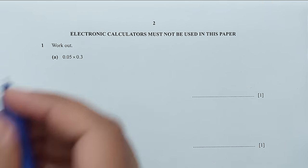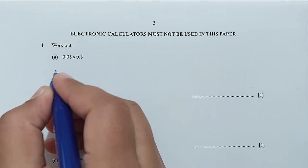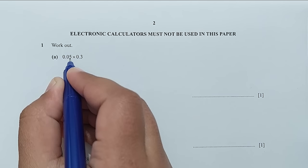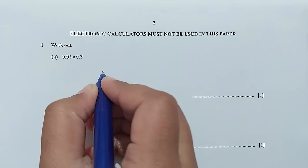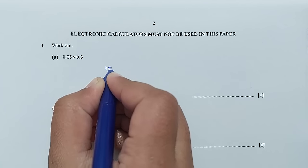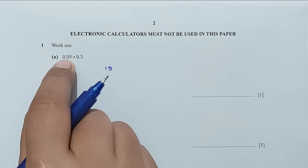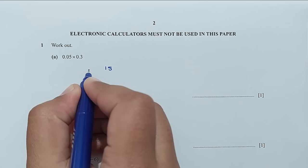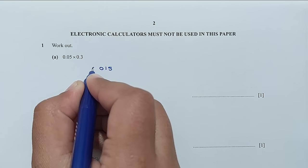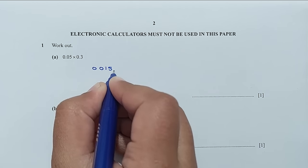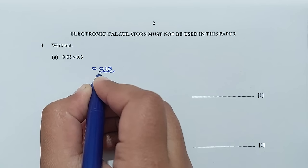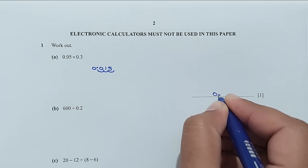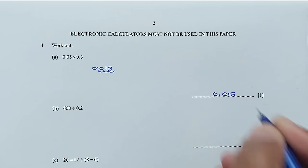Question number 1, work out part A: 0.05 times 0.3. So 5 times 3 would be 15, and we have 1, 2, and 3 decimal places. So let me add zeros: 1, 2, and 3 decimal places. So 0.015 is the answer.